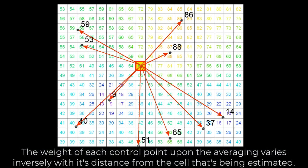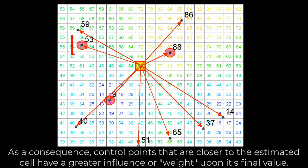The weight of each control point upon the averaging varies inversely with its distance from the cell that's being estimated. As a consequence, control points that are closer to the estimated cell have a greater influence or weight upon its final value.